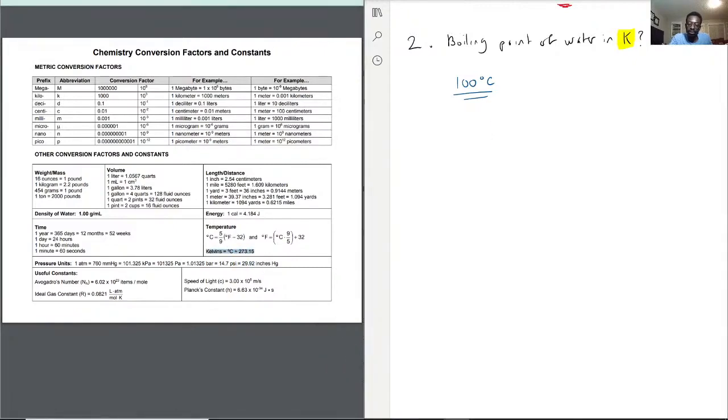plus 273.15. That's what we're going to use here. So Kelvin is equal to degrees Celsius plus 273.15. And that's how you get to Kelvin, so now let's plug in our number.